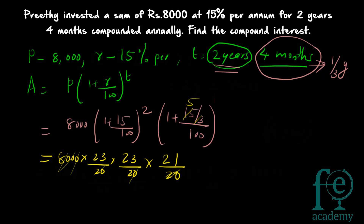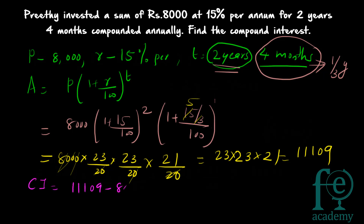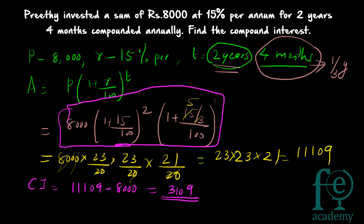Now 1 + 15/100 = 115/100 = 23/20. So the expression becomes 8000 × (23/20) × (23/20) × (21/20). The 8000 and 20^3 = 8000 cancel out, leaving 23 × 23 × 21 = 11109. So the amount is 11,109 and the principal is 8,000, giving compound interest = 11109 − 8000 = Rs.3,109. The important concept here is splitting the formula for non-whole-number time periods. Thank you for watching.